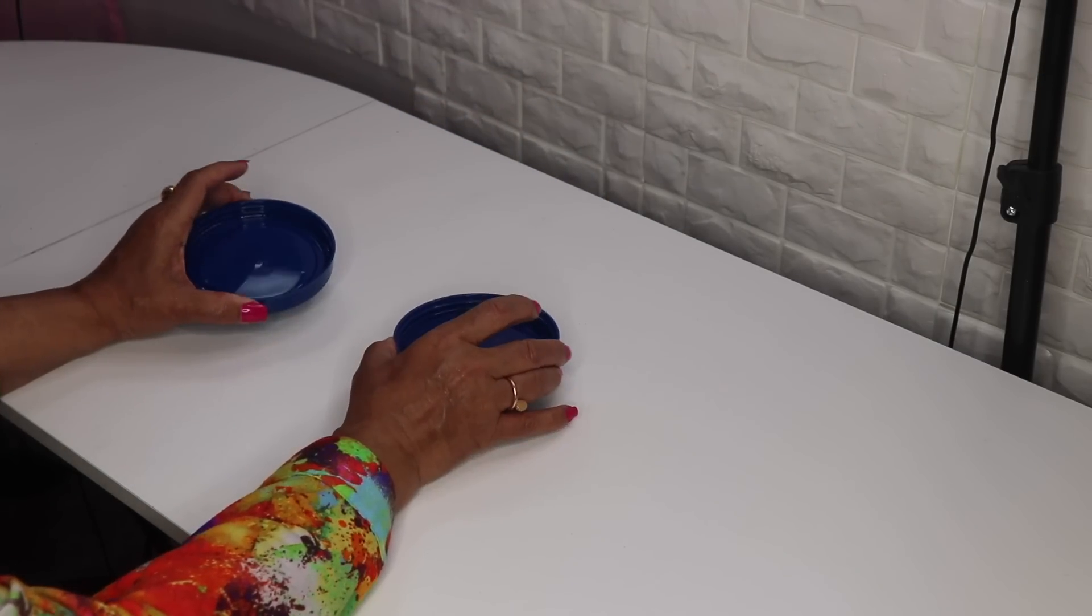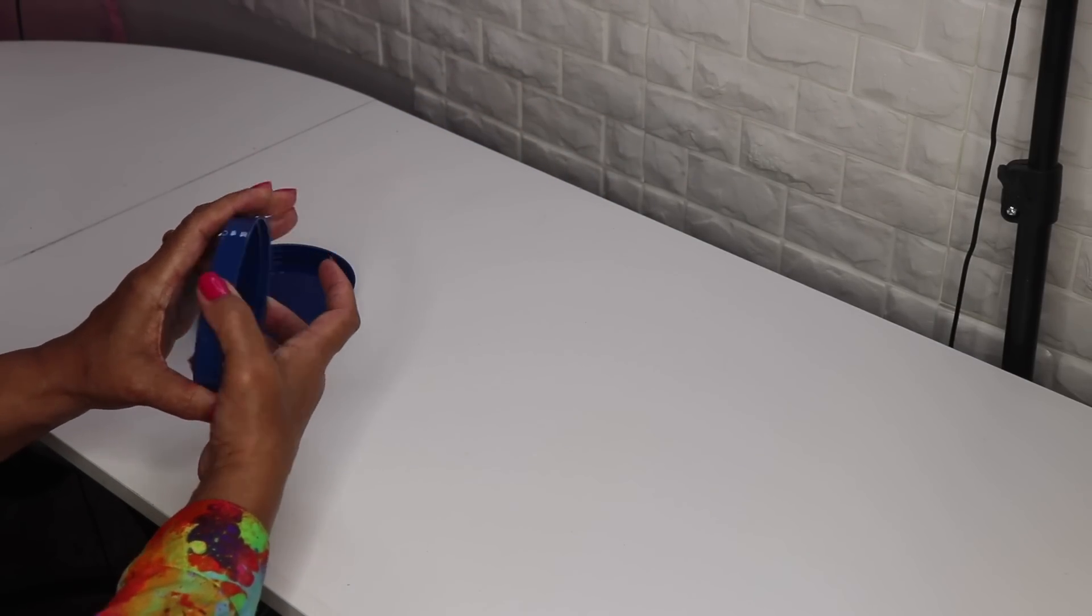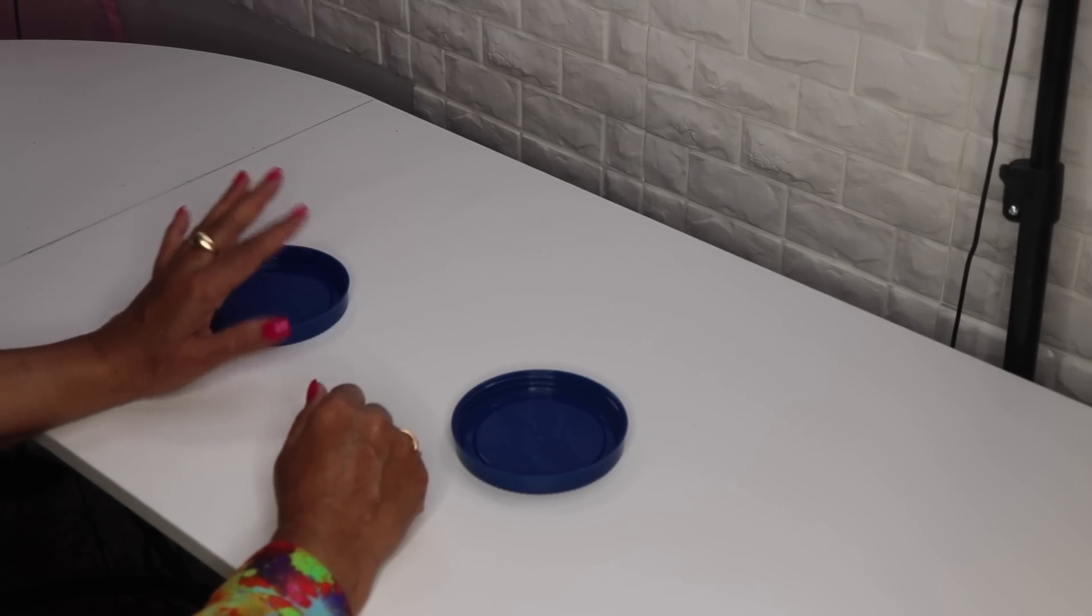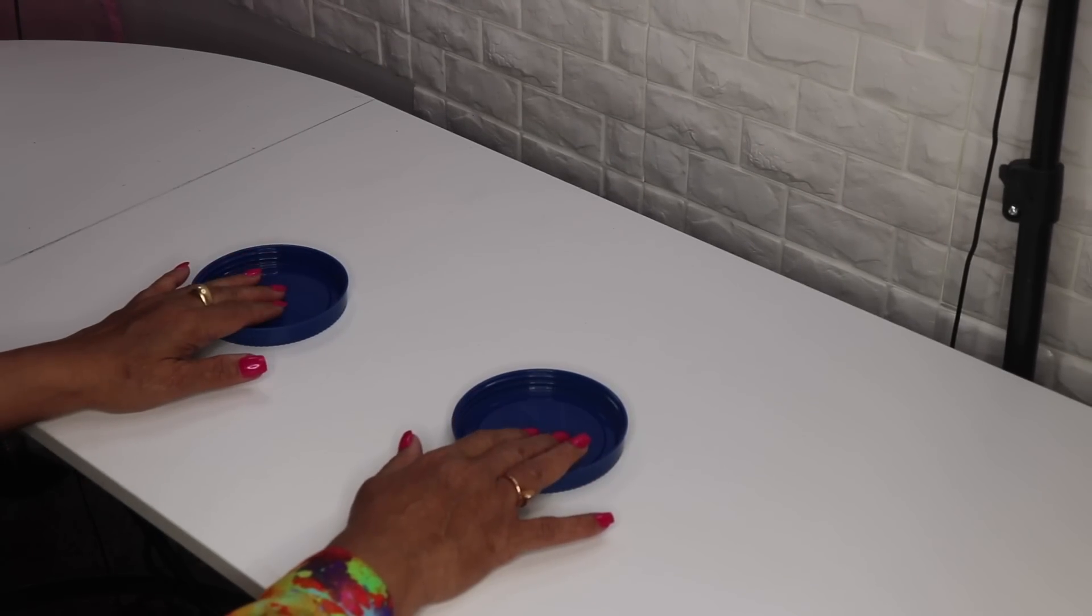One of the lids I'll cut the circle out, the other one I'll leave the whole lid intact. So let me get my hot knife and let's get started.